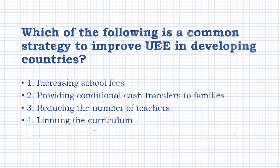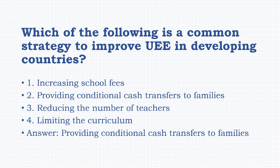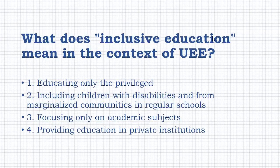Which of the following is a common strategy to improve UEE in developing countries? Options: increasing school fees, providing conditional cash transfers to families, reducing the number of teachers, limiting the curriculum. The answer is: providing conditional cash transfers to families.